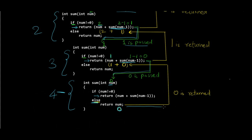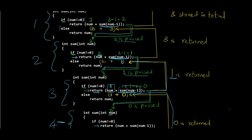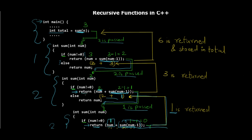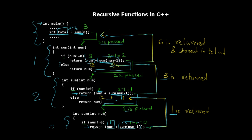Now the return journey begins. From the fourth iteration, zero is returned to the third iteration: one plus zero equals one. That one is returned to the second iteration: two plus one equals three. That three is returned to the first call: three plus three equals six. Six is finally returned to the int main function and assigned to the total variable. This is exactly how the recursive function worked in our practical example.